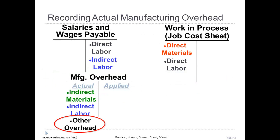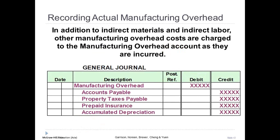Additional manufacturing overhead amounts are debited to the manufacturing overhead account. The debit side of this account represents actual overhead incurred during the period. The credit side includes various liability accounts such as accounts payable and property taxes payable, as well as prepaid assets like prepaid insurance and contra accounts for depreciation. This journal entry represents the accumulation of actual overhead such as property taxes on the manufacturing plant, insurance, and depreciation of manufacturing assets.